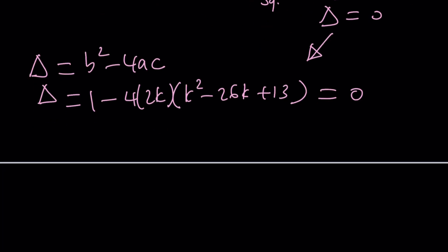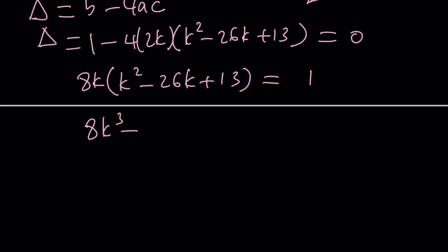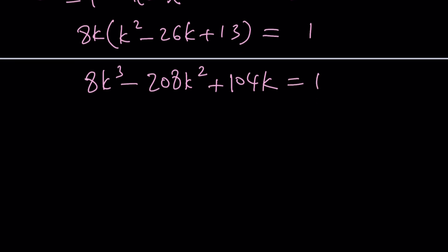So we can put everything on the same side and keep the 1 here. So from here we get 8k times k squared minus 26k plus 13 is equal to 1. And then by distributing 8k cubed, what is 8 times 26? That must be 208. k squared plus, what is 13 times 8k? I think that's 104k, and that's equal to 1.